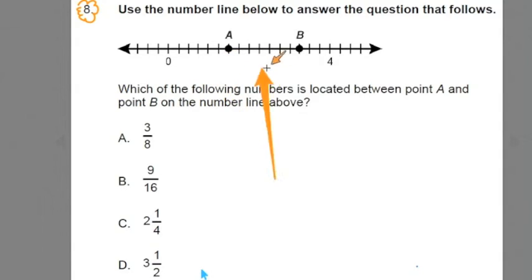You'll notice it involves a number line with values between 0 and 4. I'll start by reading this problem over, and then we'll go about interpreting the number line and solving. It says, use the number line below to answer the question that follows. They give us a number line. And it says, which of the following numbers is located between point A and point B on the number line above?